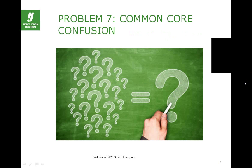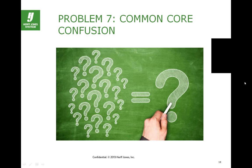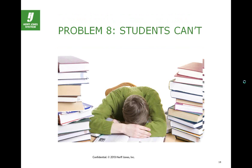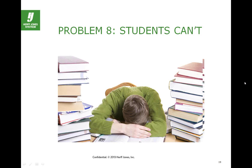Problem seven is that there is still significant confusion about what the Common Core Standards actually are. Who wrote them? Where did they come from? What do they mean for social studies? What kinds of strings are attached to adoption? Confusion reigns. And finally, there's real concern on the part of teachers who do a close reading of the Common Core State Standards and say these are great goals, but my students really can't do this work — it's just beyond their capabilities.